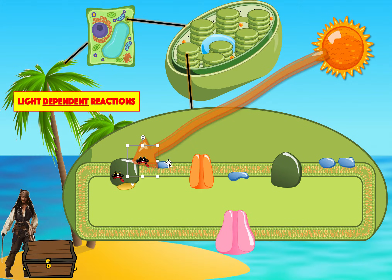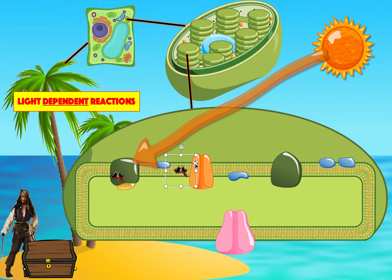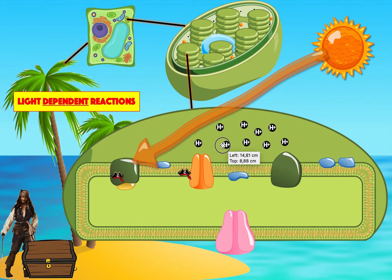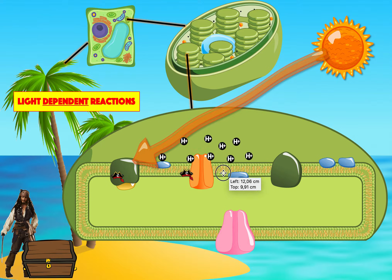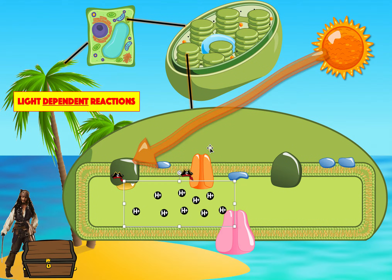These excited electrons get captured by these little blue carrier proteins. When these proteins capture the electron, they move them towards this little orange structure called the proton pump. Outside of the thylakoid, in the stroma, we have a lot of protons — H+ molecules. These protons can only travel through this pump if electrons allow it. Once the electrons reach the proton pump, they transfer their energy into it and activate it, causing all of these protons to come flowing right through.